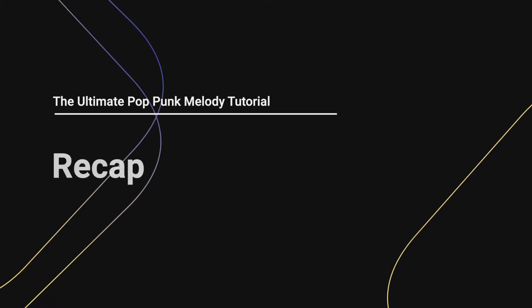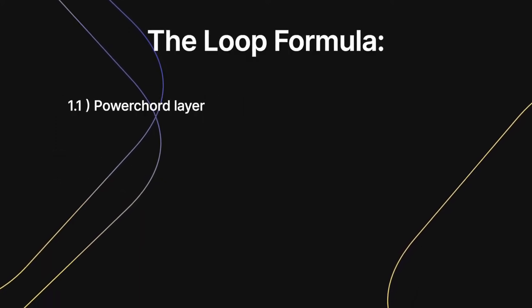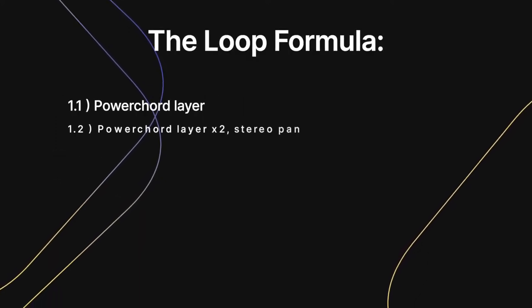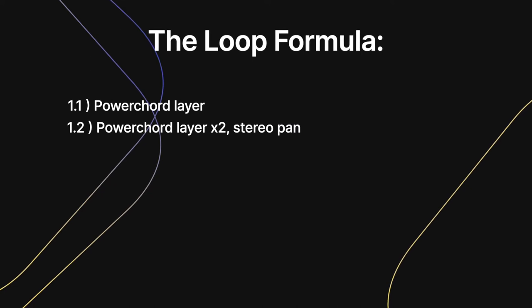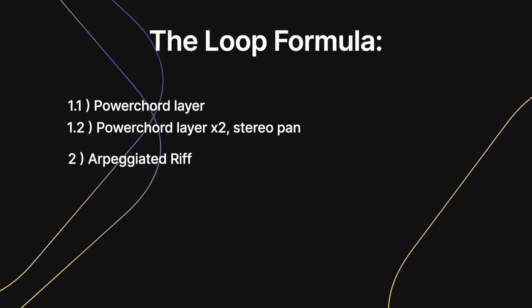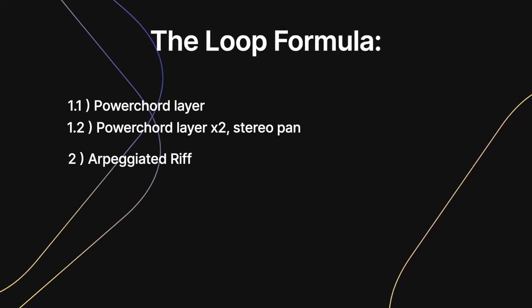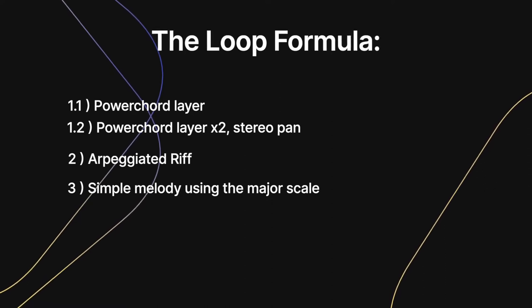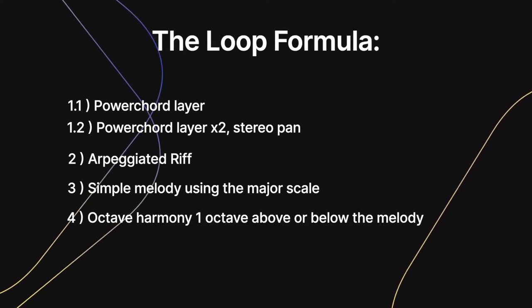To recap: Step 1.1 is to record a power chord layer of your chord progression. Step 1.2 is to double track the power chord layer and stereo pan them. Step 2 is to play an arpeggiated riff that changes the bass note to match the chord being played in the progression. Step 3 is to play the simplest melody possible using the major scale. Step 4 is to record an octave harmony one octave above or below your melody. If you follow these steps, you will write bulletproof pop punk loops every time.